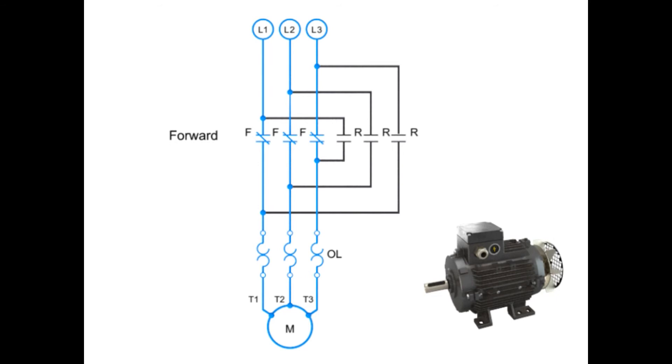To run the motor in reverse, two of the contacts must be switched. In this case, L1 is connected to T3, and L3 is connected to T1. L2 and T2 remain connected. This reversal of contacts will cause the motor to run in the opposite direction.